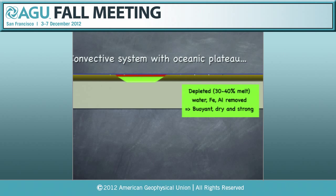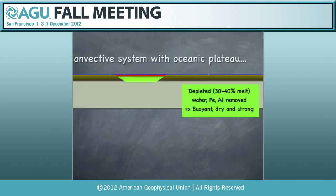I impose an oceanic plateau. The depleted mantle is buoyant — water, iron, and aluminum have been removed; it is dry and strong. Its rheology is 100 times more viscous than the convective mantle. Above it is a mafic granulite about 40 kilometers thick, and on top a 15-kilometer-thick layer of dense but weak material is imposed to help the subduction process. This layer was also introduced in the model without the oceanic plateau.